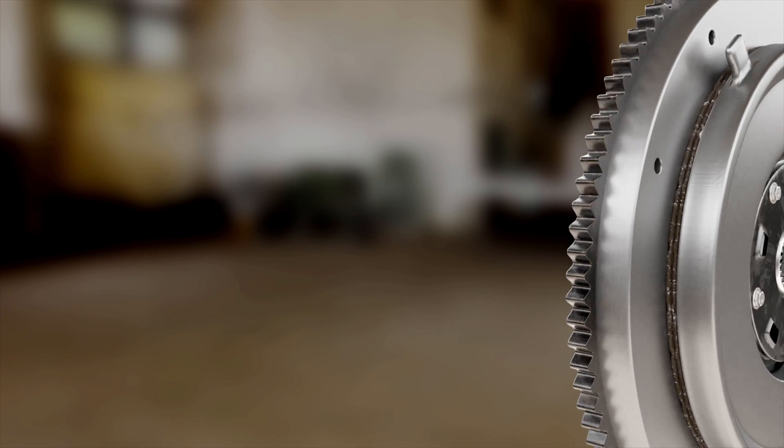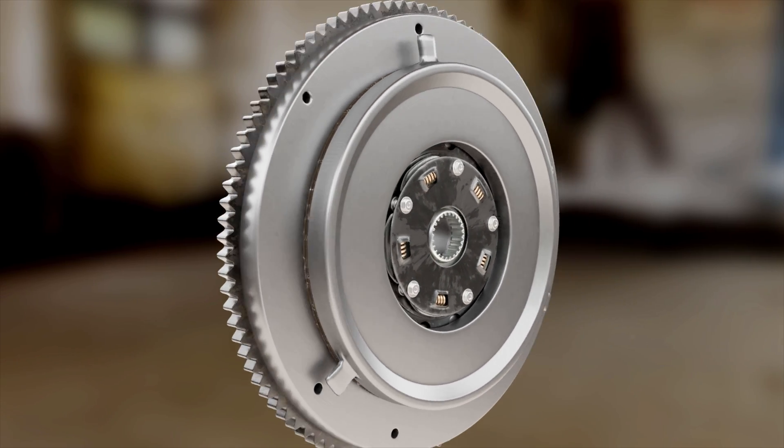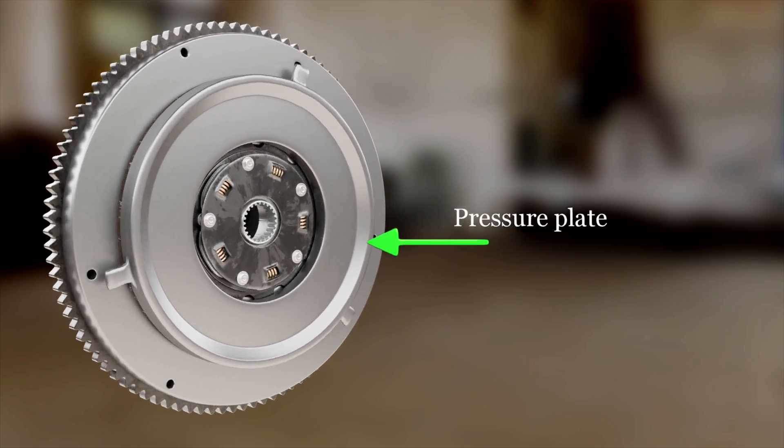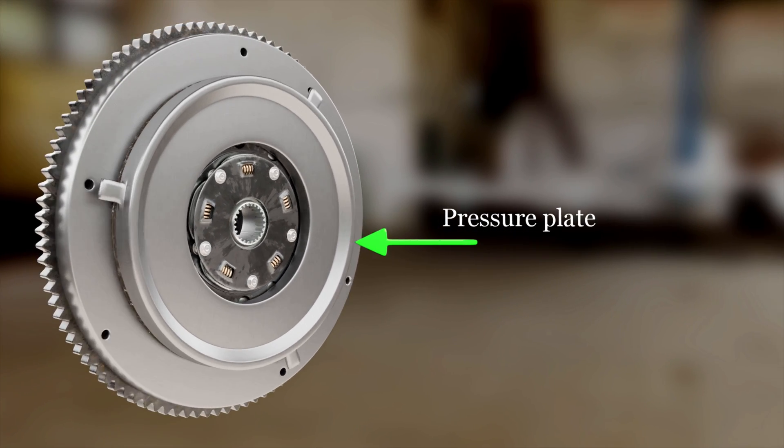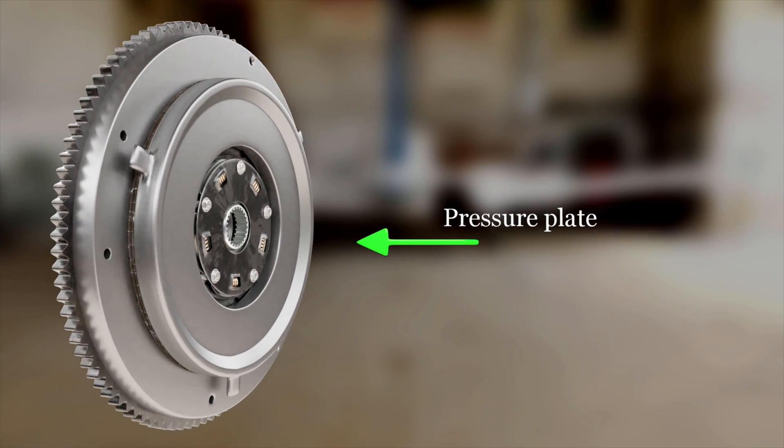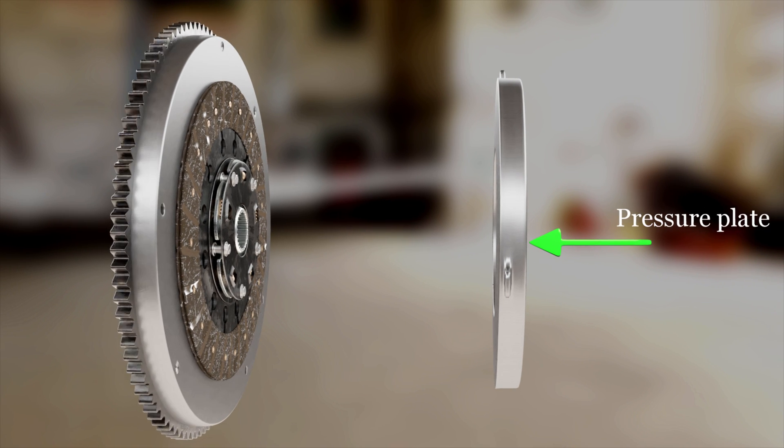The axial force for engagement of the clutch is provided by the pressure plate. The pressure plate is supported by the clutch cover in a flexible manner with the help of strap plates.